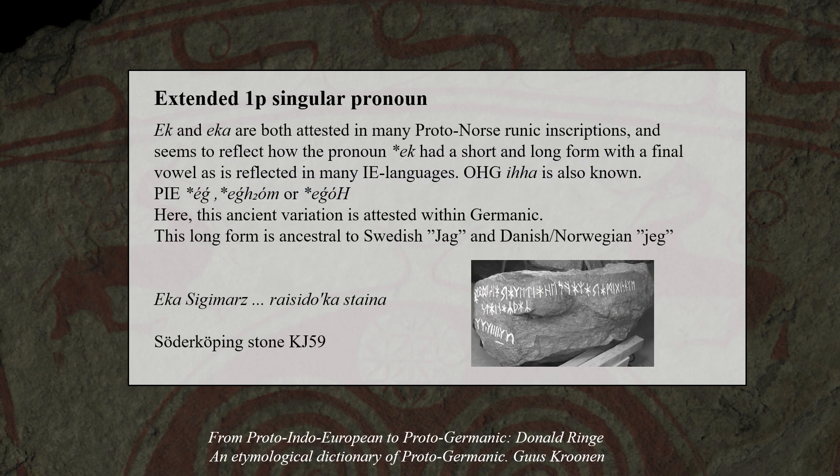The Proto-Indo-European first person pronoun shows up either with one or two syllables in daughter languages, and this is actually seen within Germanic. For example, both the forms 'ek' and 'ekka' are actually attested in runic inscriptions, and the long form 'ekka' is ancestral to Swedish 'jag' and Danish-Norwegian 'jeg', meaning that this variation was still productive within Germanic.